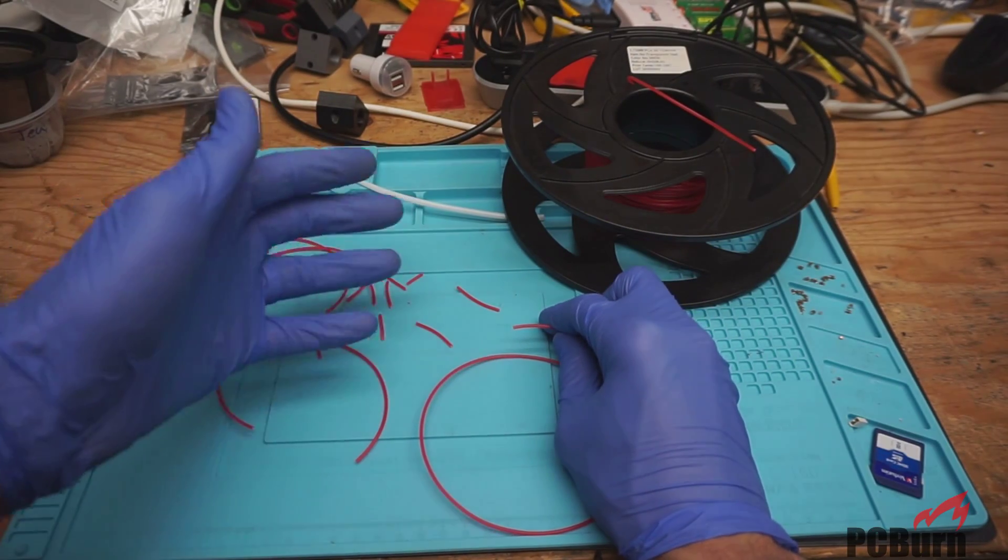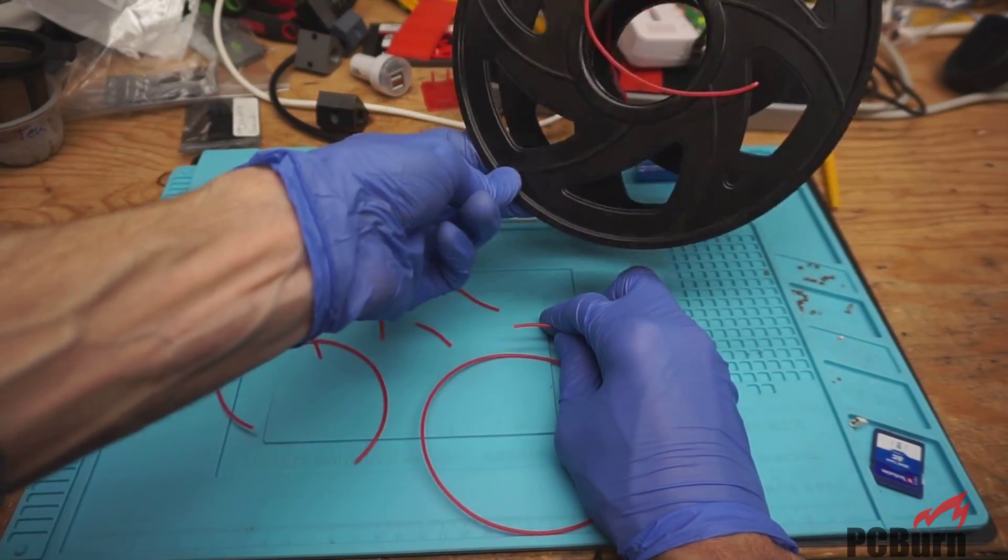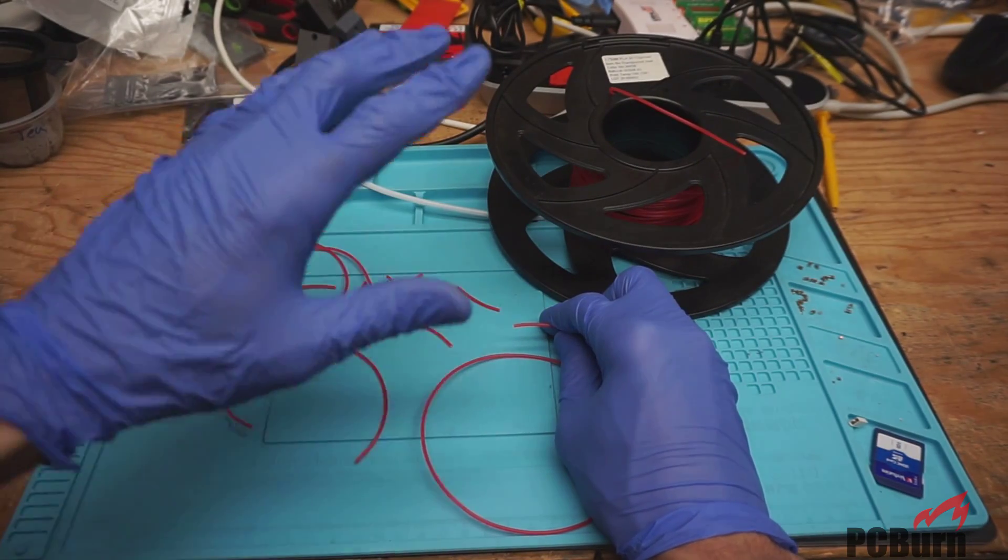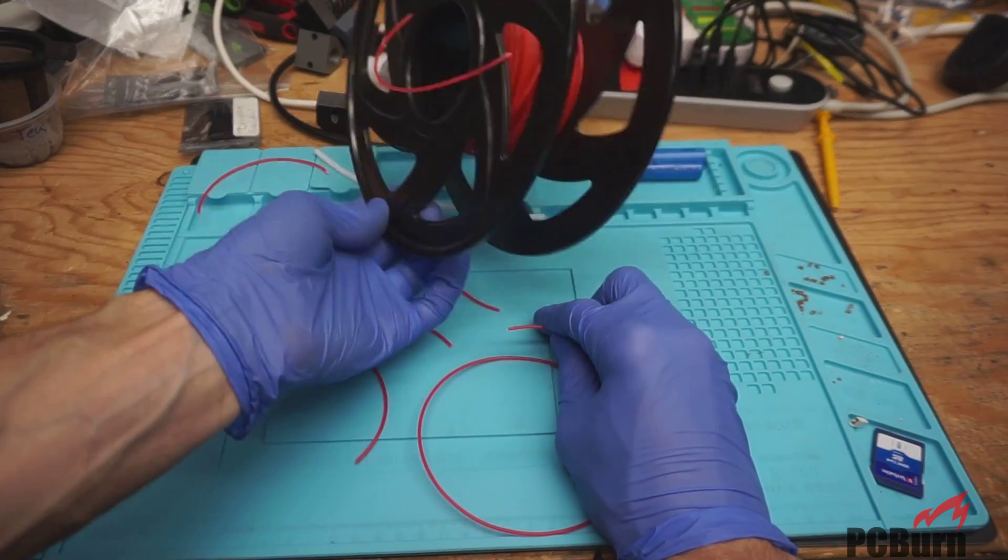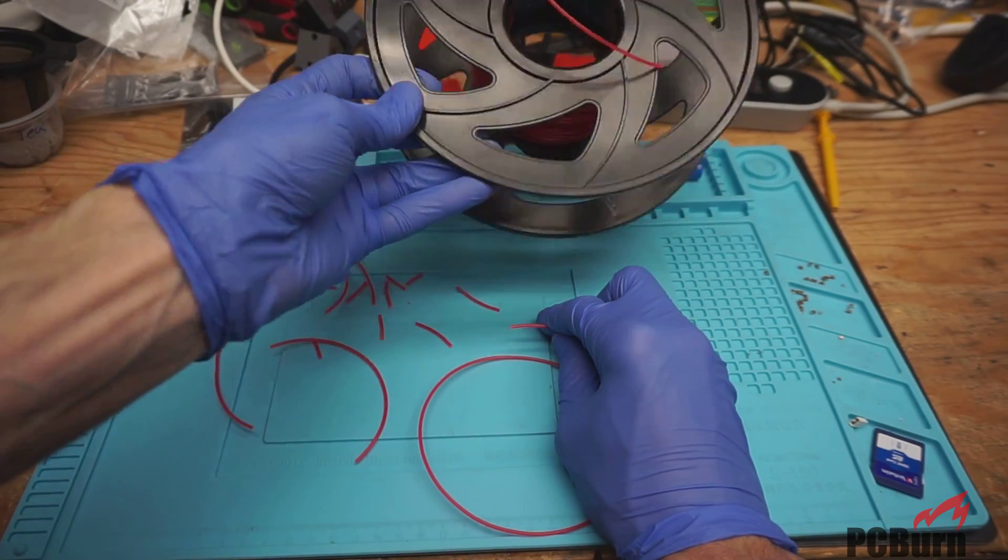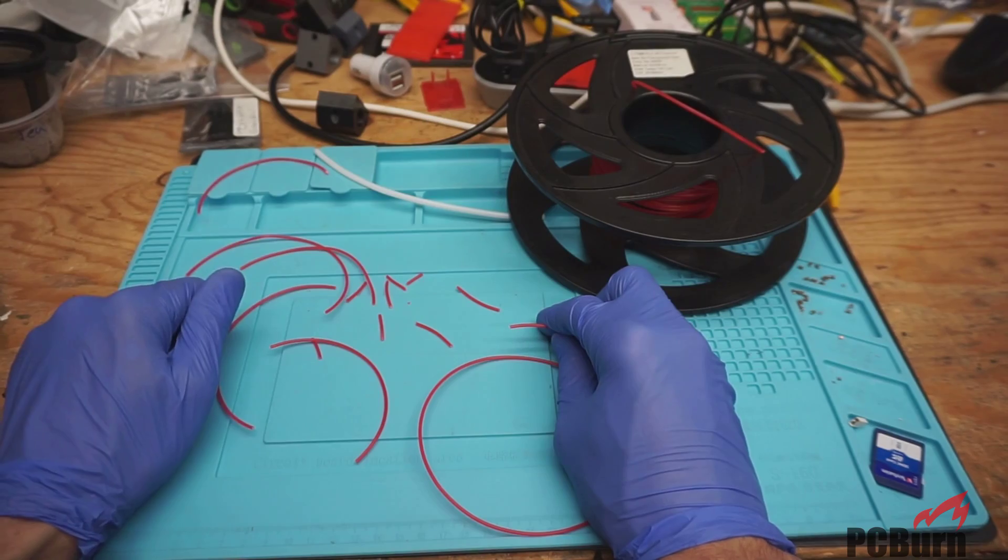So, if you want to prevent that, just take the spool off the Bowden tube. Just make sure that the filament isn't being held straight by something. That it's nicely wound around its spool. And you shouldn't have any problem.